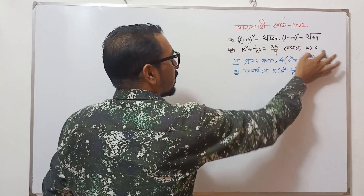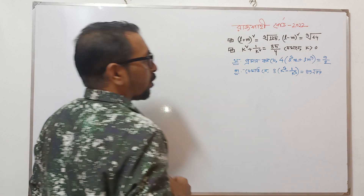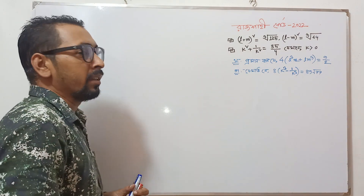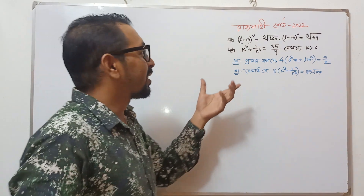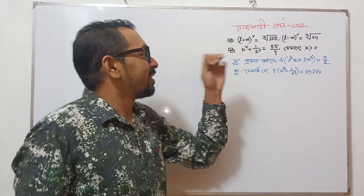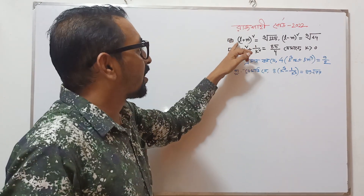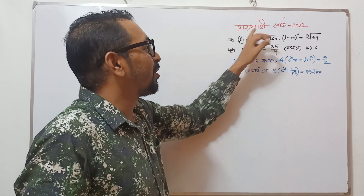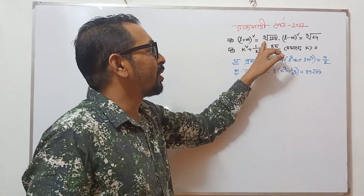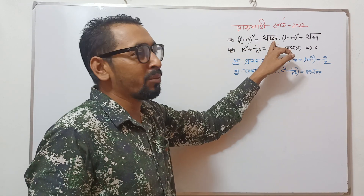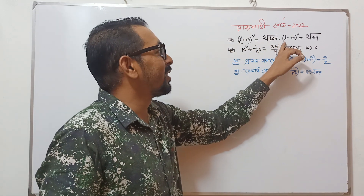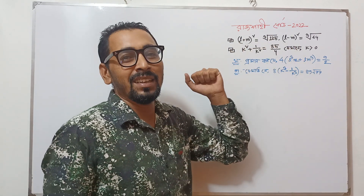And k 0 goes to the center. We have to divide it in a second. L plus m² equal to Q¹ P0.